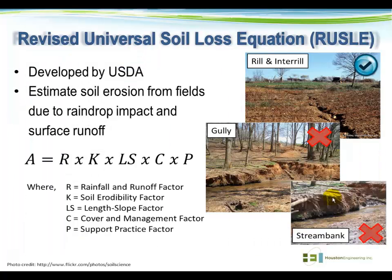The other metric we're computing uses the Revised Universal Soil Loss Equation, or RUSLE. RUSLE was developed by the U.S. Department of Agriculture and is used to estimate soil erosion from fields due to raindrop impact and surface runoff. RUSLE is applicable for estimating erosion due to rill and interrill erosion — essentially areas experiencing overland flow — but does not estimate gully erosion or stream bank erosion. The RUSLE equation takes into account numerous factors such as the erodibility of the soil, the slope of the landscape, what crops are being grown or if the area is in forest, and optionally information on whether conservation measures are being implemented.